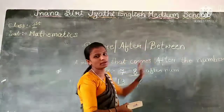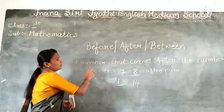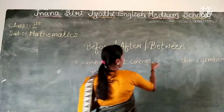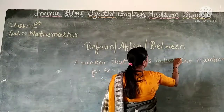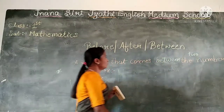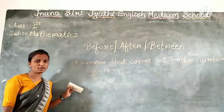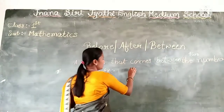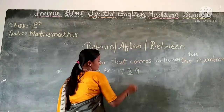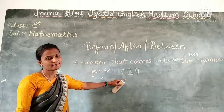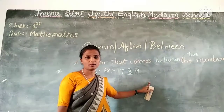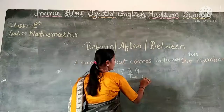We shall move on to the between number concept. A number that comes between two numbers is called the between number. For example, 8 comes between 7 and 9. Is it right? Yes. The number 8 comes between 7 and 9, so 8 is called the between number.